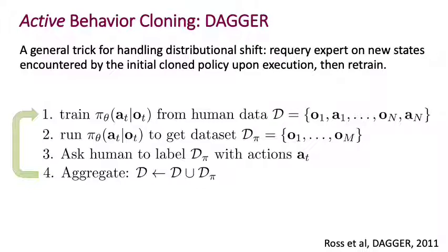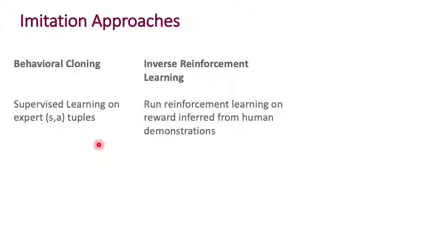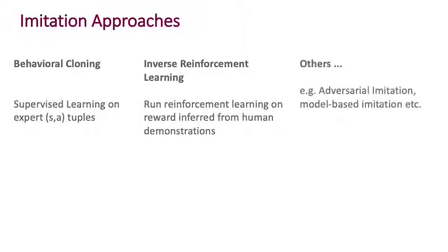This behavioral cloning plus Dagger approach is quite widely used. Beyond behavioral cloning, the second most important category is inverse reinforcement learning, where you try to infer a reward function from human demonstrations and then run reinforcement learning on it. There are also other approaches like adversarial imitation — an important method called GAIL, or Generative Adversarial Imitation Learning — as well as model-based imitation and others.